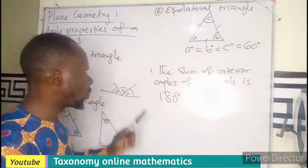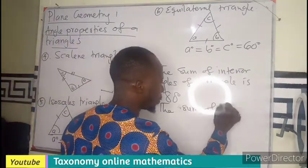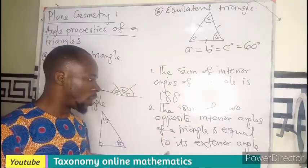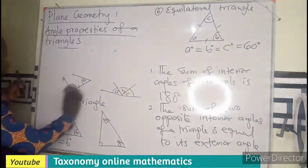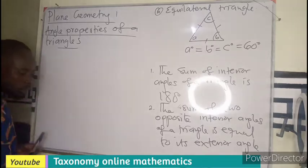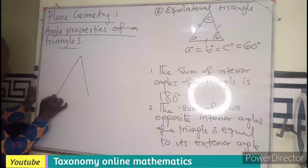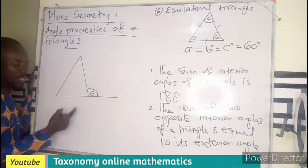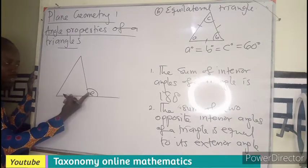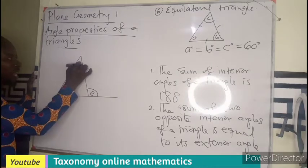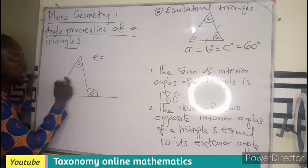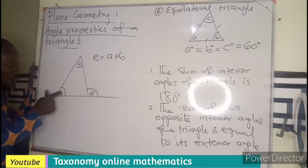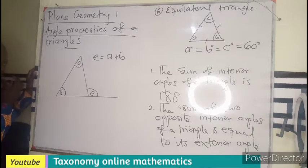The angles inside a triangle are called interior angles; the angles outside are called exterior angles. There is also a second property common to all triangles: the exterior angle of a triangle is equal to the sum of the two opposite interior angles. So if the exterior angle is E, and the two opposite interior angles are A and B, then E equals A plus B.